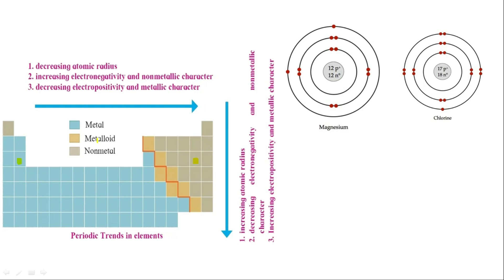So, as we go from left to right — from magnesium to chlorine within one period — the atomic radius decreases. That is the first trend. The second trend is that electronegativity or non-metallic character increases as we go left to right. We know that magnesium is a metal and chlorine is a non-metal. Towards the right side, non-metals start appearing, while the left side has metals.